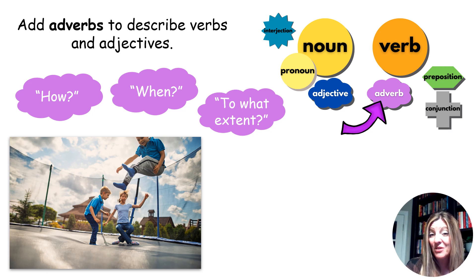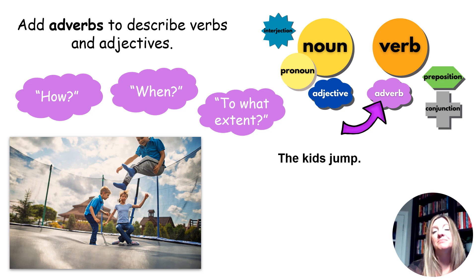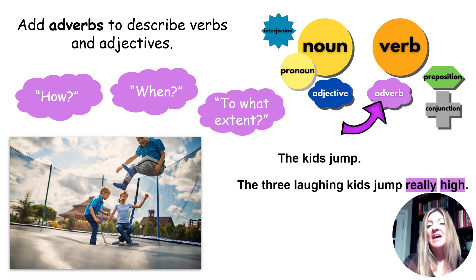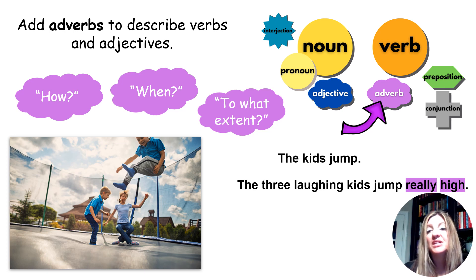I show them this sentence: 'the kids jump.' And I have them close their eyes. I don't know anything about what to visualize because I don't have very much detail. So I let them play around. How do they jump? When do they jump? To what extent do they jump? And we come up with 'three laughing kids jump really high.' I'm describing how many and what kind of kids — adjectives — and I'm also building on how they jump: they jump high. To what extent? Really high.